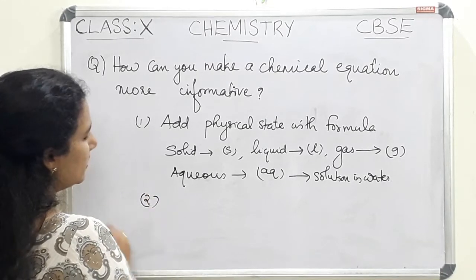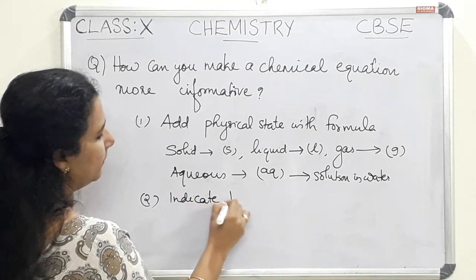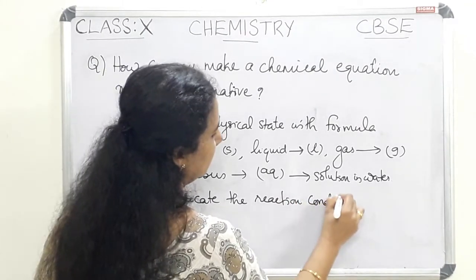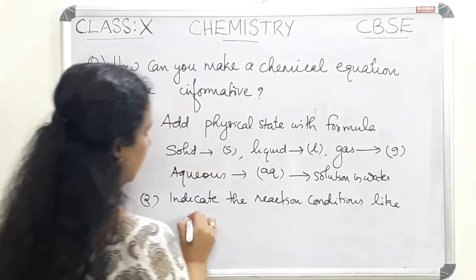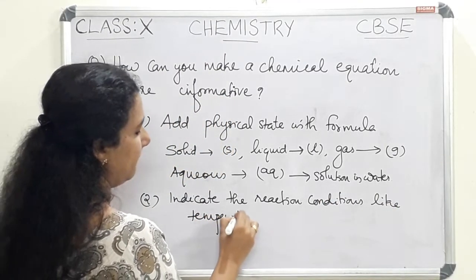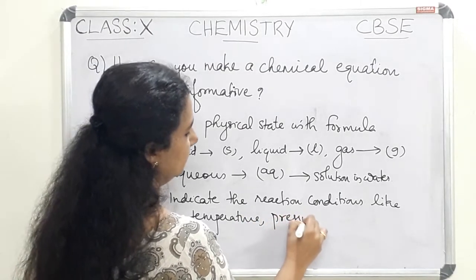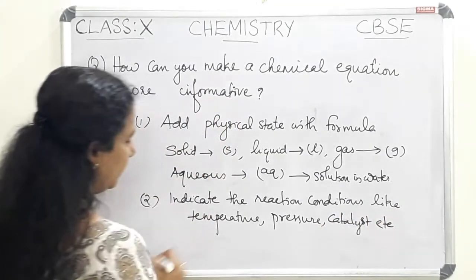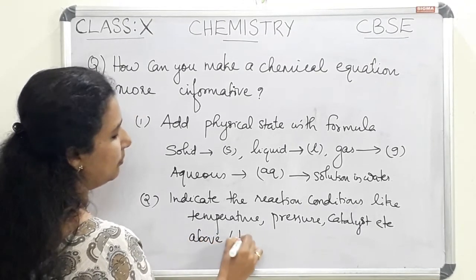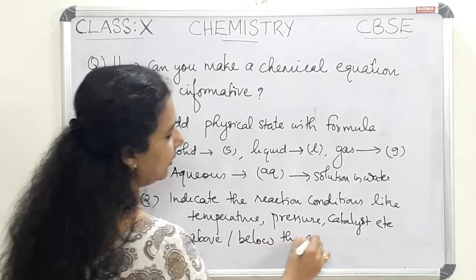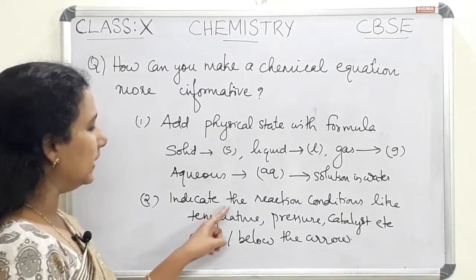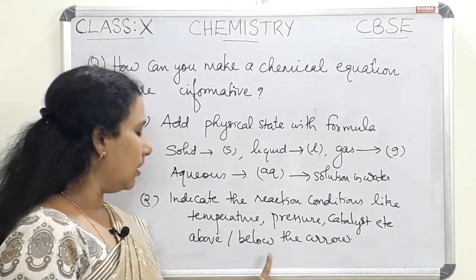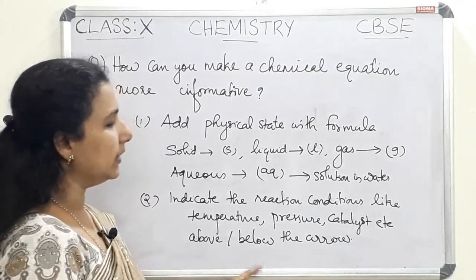The second point is we have to indicate the reaction conditions. The reaction conditions like temperature, pressure, catalyst, etc., are written above or below the arrow of the chemical equation.